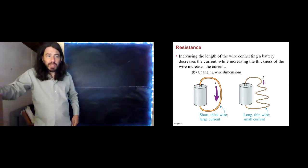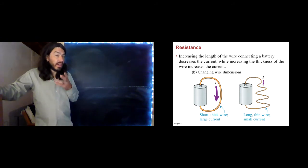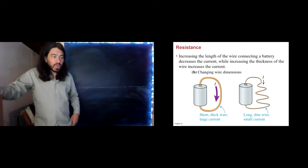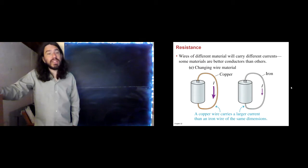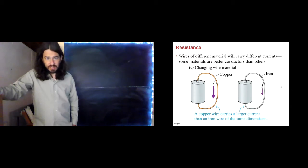The thing that is different between these two, obviously the length and the thickness are different, but the electrical property that that affects is the resistance. This wire has a smaller resistance than this wire does. Therefore, this wire will carry a larger current when hooked to the same battery. Smaller resistance, larger current if hooked to the same battery. Larger resistance, smaller current hooked to the same battery. So, the length and the thickness of a wire affect its resistance, but the material also affects its resistance.